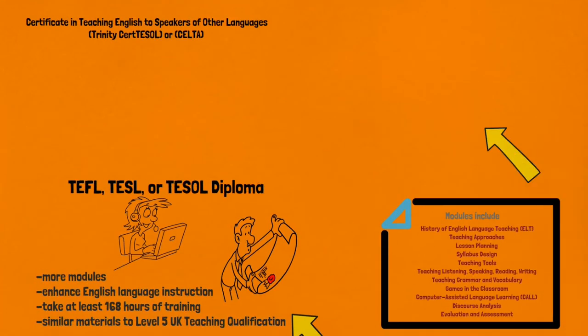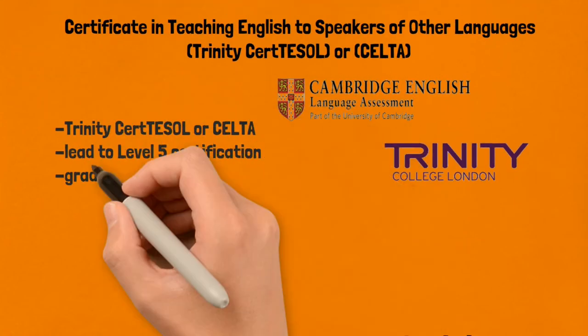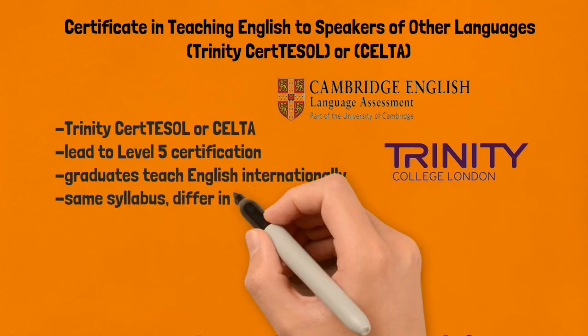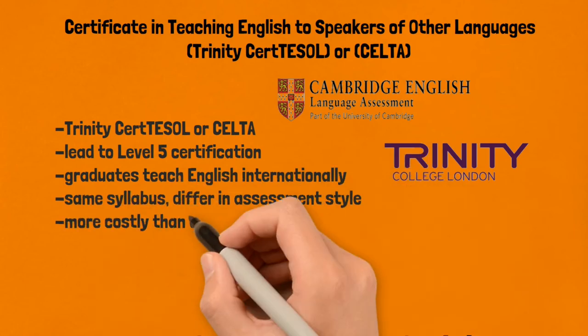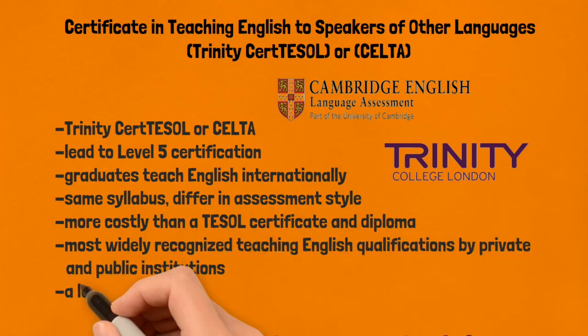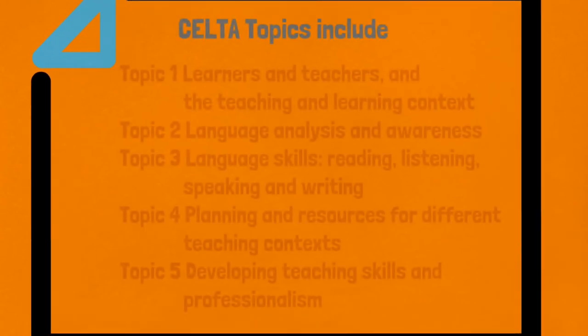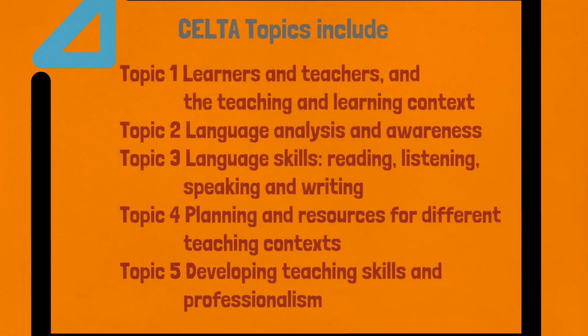To advance your career, earn a Certificate in Teaching English to Speakers of Other Languages from Trinity College London, or a Certificate in English Language Teaching to Adults — now known as Certificate in Teaching English to Speakers of Other Languages — from Cambridge. Both lead to Level 5 certification, enabling graduates to teach English internationally. They have the same syllabus but differ in assessment style. These courses are more costly than a TESOL certificate and diploma, and are the most widely recognized teaching English qualifications by private and public institutions, putting them at a level below a bachelor's degree. Of the two, CELTA is more popular among employers because it carries the Cambridge brand.